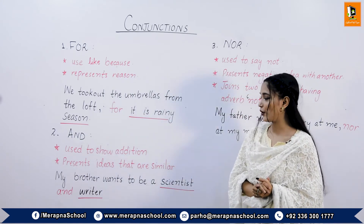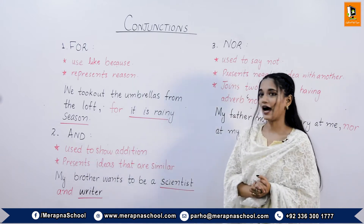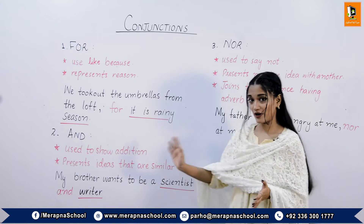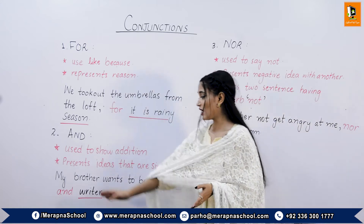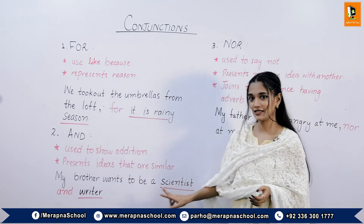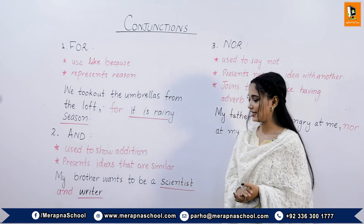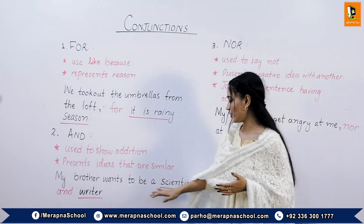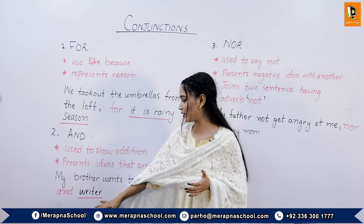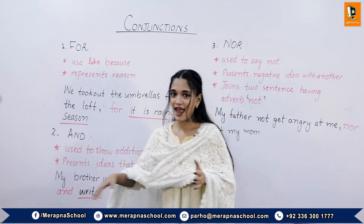The next coordinating conjunction is 'and'. 'And' can be used to show addition and it presents ideas that are similar. For example: 'My brother wants to be a scientist and writer.' In this sentence, the brother wants to be a scientist and a writer — the addition is represented by 'and'.